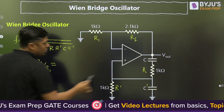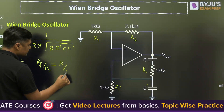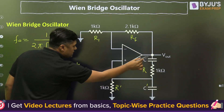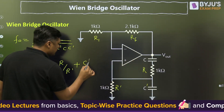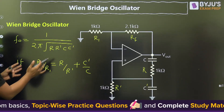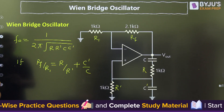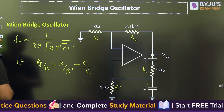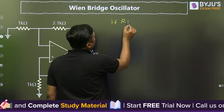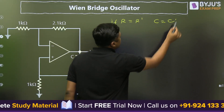The condition for oscillation requires that RF divided by R1 should be equal to R divided by R-dash plus C-dash divided by C. This relationship is called the condition for oscillations.